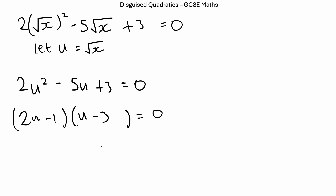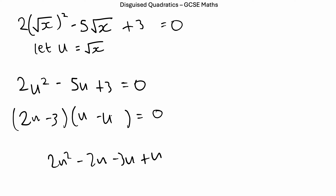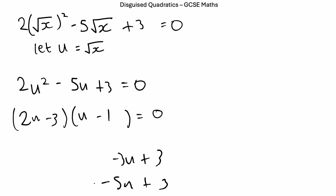What if we put minus 3 first? That'll mean it multiplies with the smaller u, giving us a smaller middle number. 2u times u is 2u squared. 2u times minus 1 is minus 2u. Minus 3 times u is minus 3u. Minus 3 times negative 1 — minus and minus makes it positive — so plus 3. That gives us minus 5u and 2u squared, which is what we want. So this is our factorized form.